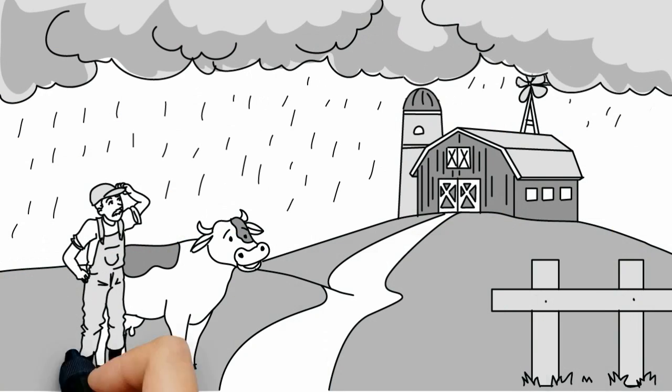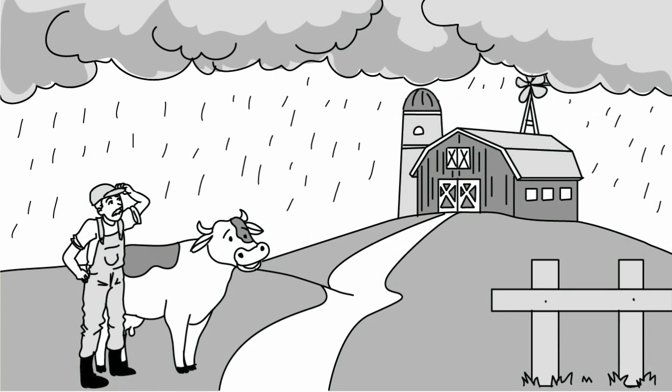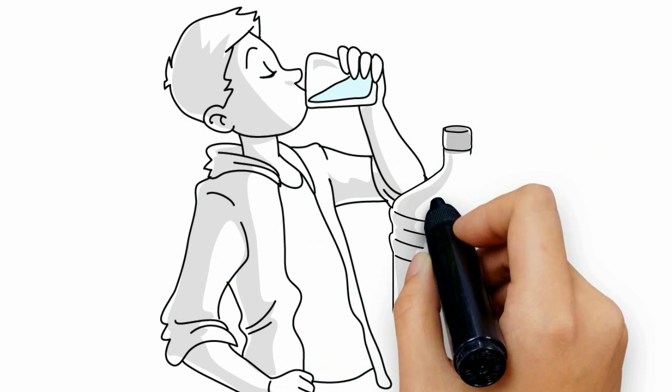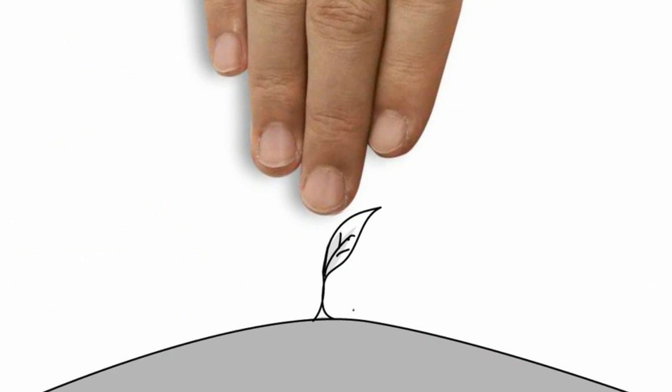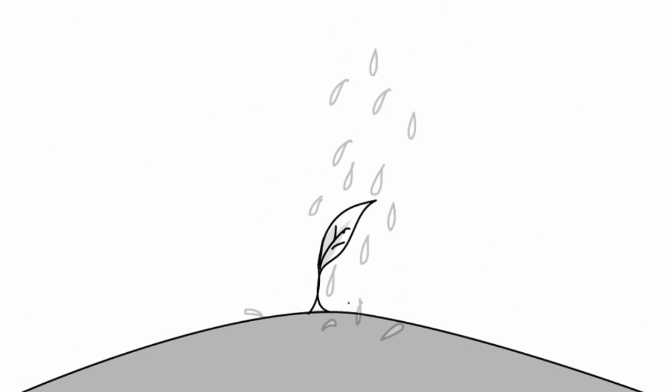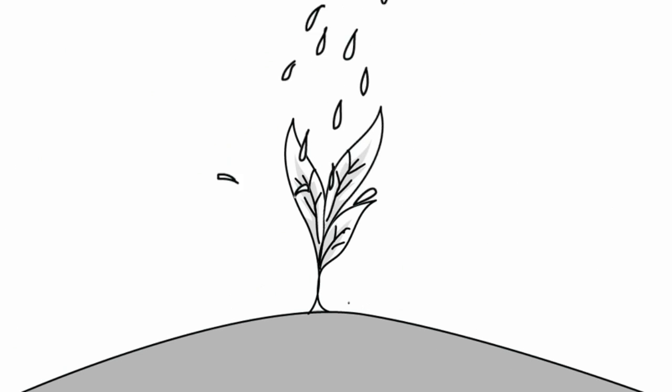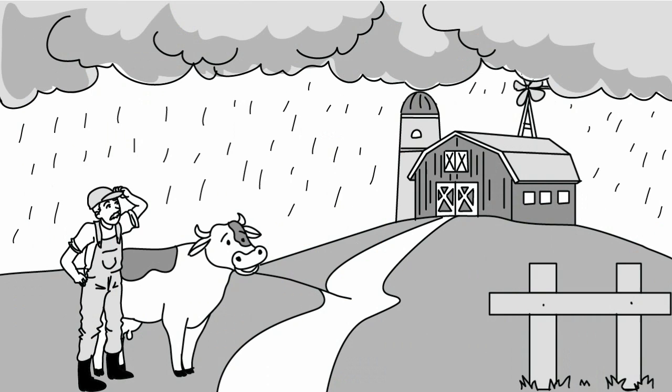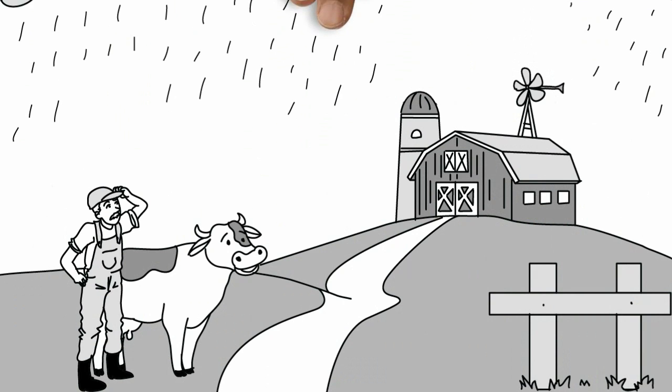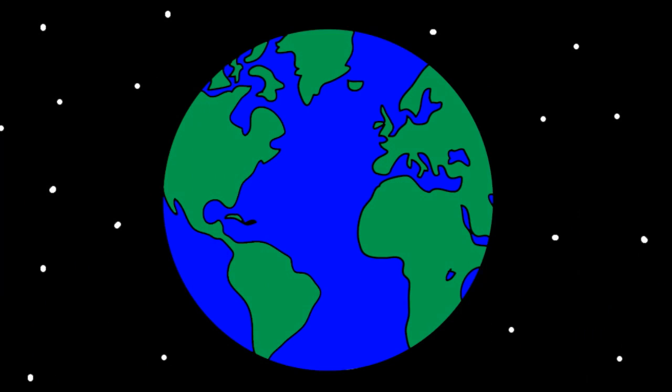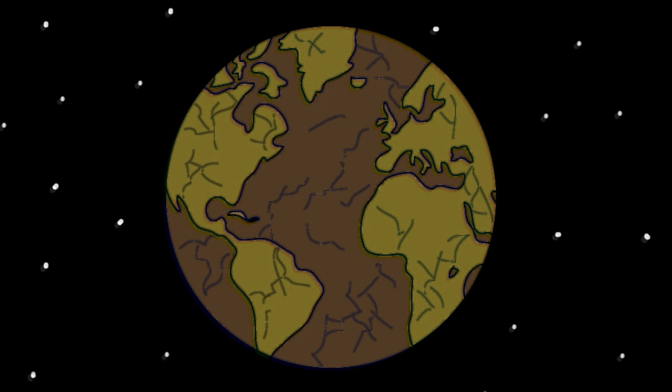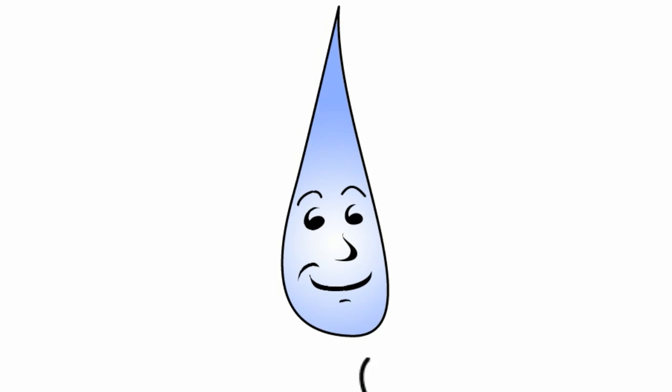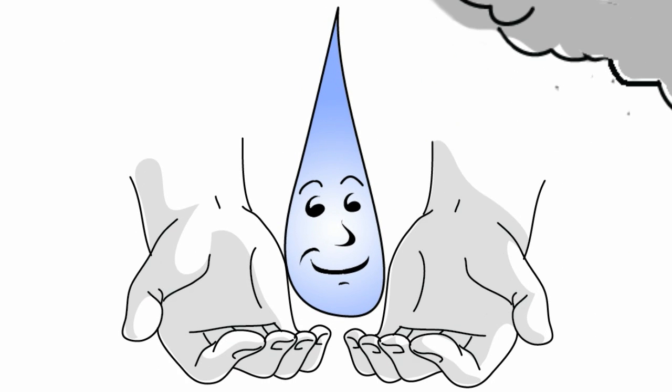It grows our food, nourishes our bodies and provides life to all living things. Today, less of it is falling from the sky and much of our planet is in dangerous drought.